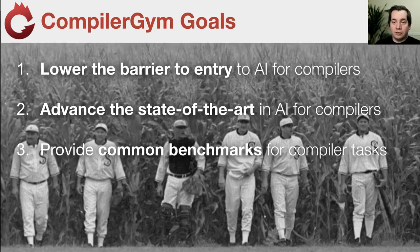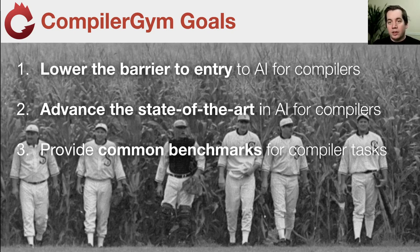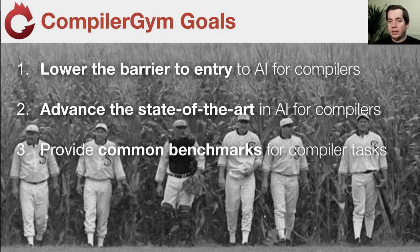The CompilerGym project has three goals. First, we want to lower the barrier to entry to AI for compilers — make it as easy as possible for researchers to start playing around with real compiler problems. Second, we want to advance the state of the art in AI for compilers, because we genuinely believe the future of optimizing compilers will be through machine learned optimization heuristics. Third, we want to provide a set of common benchmarks to compare different machine learning approaches on the same compiler optimization tasks.